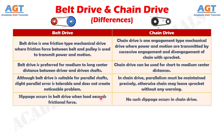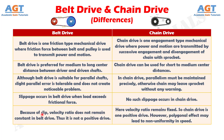Number 4: Slippage occurs in belt drive when load exceeds frictional force. Whereas, no such slippage occurs in chain drive. Number 5: Because of slip, velocity ratio does not remain constant in belt drive, thus it is not a positive drive. Whereas, in chain drive the velocity ratio remains fixed, so chain drive is one positive drive.